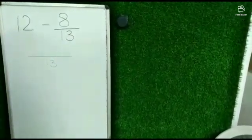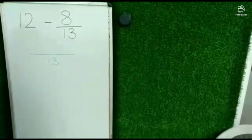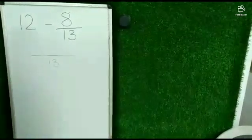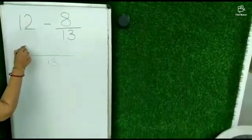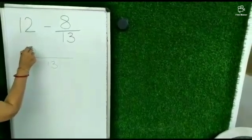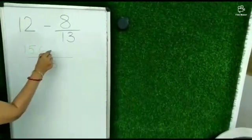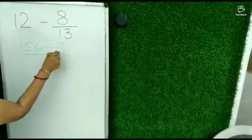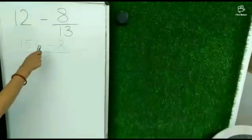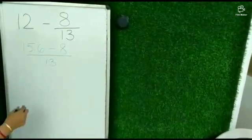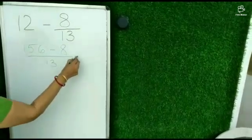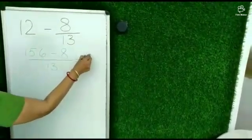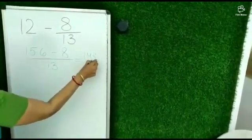Then we will multiply 13 into 12, that is 156. Then we will write minus 8 here. Now we will subtract the two numbers: 156 minus 8, that is 148 upon 13.